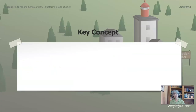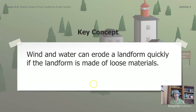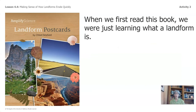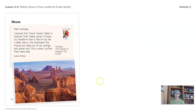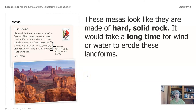We are approaching a key concept here. When we first read this book, we were just learning what a landform is — landform postcards about Annie and her trip. Now we'll review the photos to decide whether the landforms could erode quickly or slowly. For example, on page eight, mesas are made of red, orange, and yellow rock. These mesas look like they are made of hard, solid rock. It would take a long time for wind or water to erode these landforms.